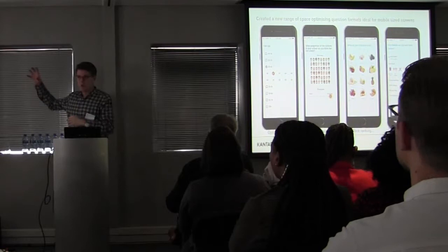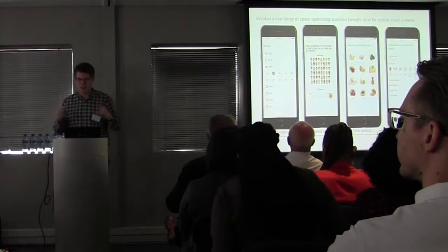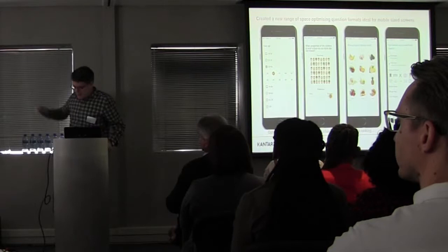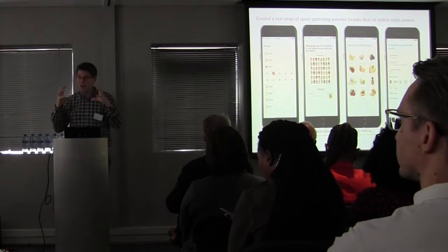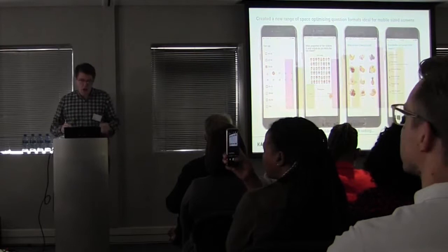We're playing around with more creative ways of asking questions that are more space-efficient. This includes a format called collapsing grids — as you answer, it stamps your choice on the options so you can see what you've answered for previous questions. It's a neat question people quite enjoy answering.